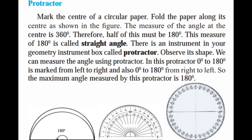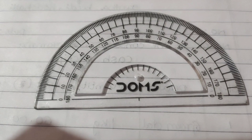The measure of the angle at the center is 360 degrees. Therefore, half of this must be 180 degrees. This measure of 180 degrees is called a straight angle. There is an instrument in your geometry instrument box called a protractor. We can measure the angle using a protractor. In this protractor, zero degree to 180 degrees is marked from left to right and also from right to left. The maximum angle measured by this protractor is 180 degrees.